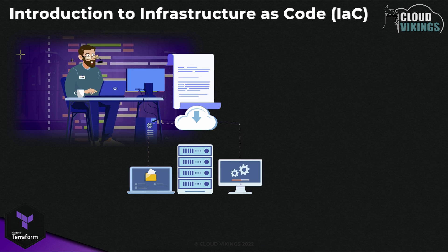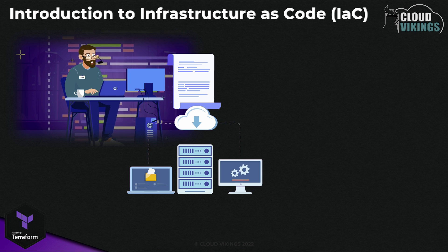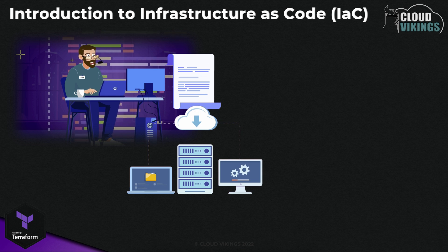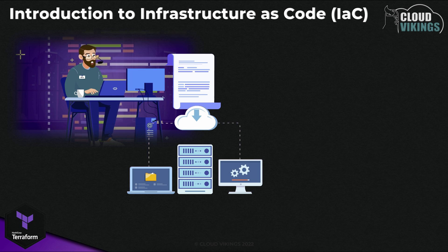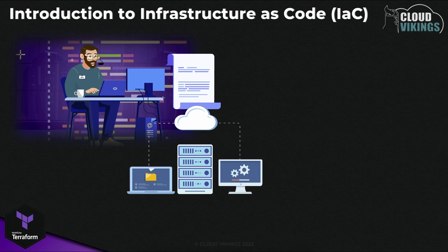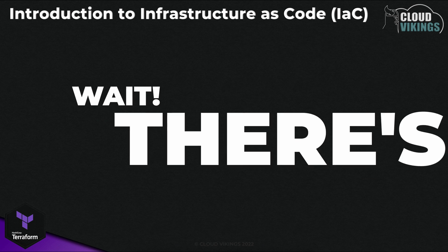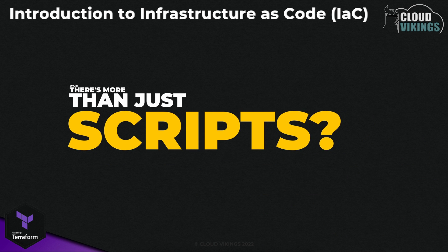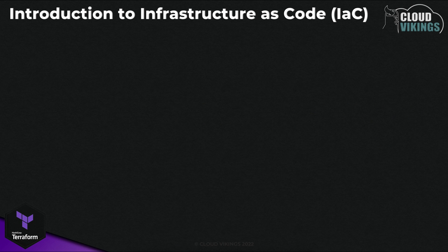If you've worked in IT a bit, you've likely done some form of infrastructure as code already. Maybe you've written bash scripts to help automate the configuration of a server or install some software components — those simple scripts are a form of infrastructure as code. So if simple scripts are a form of IaC when used for configuring or deploying infrastructure resources, are there other forms of infrastructure as code?